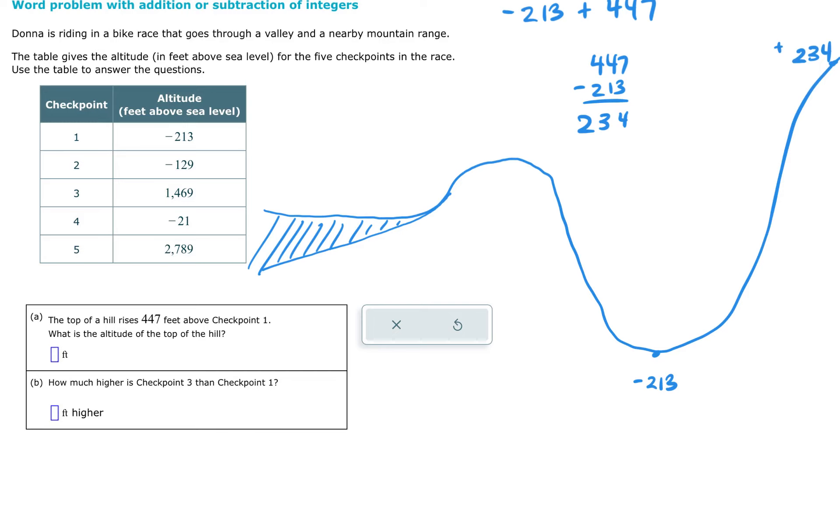So the top of the hill is 234 feet above sea level. I don't need to put a positive there because it says what's the altitude, and the altitude is 234 feet. Part B says, how much higher is checkpoint three than checkpoint one?